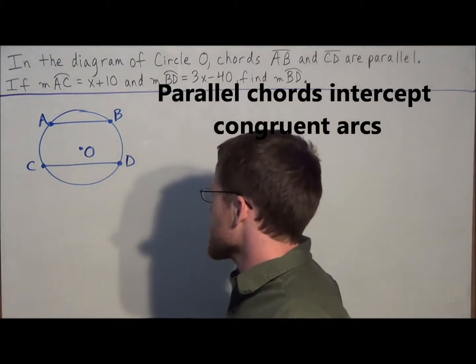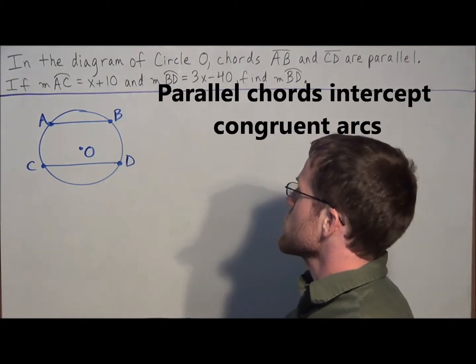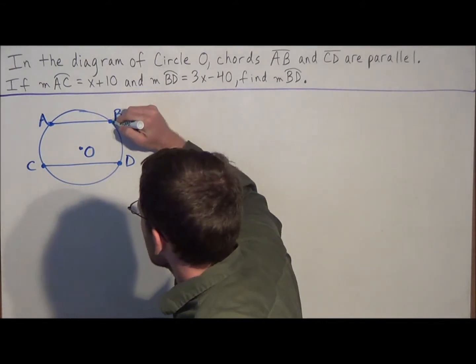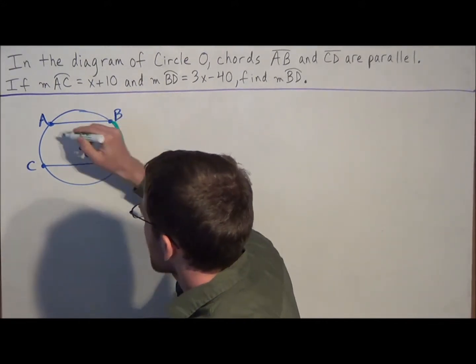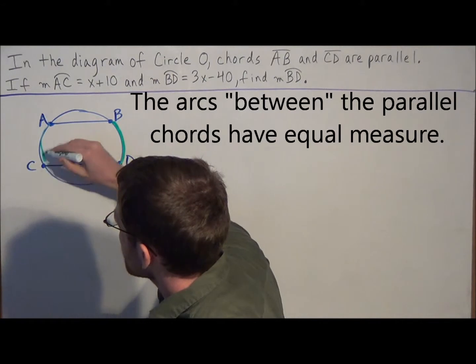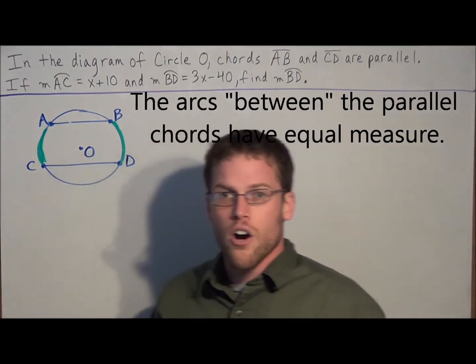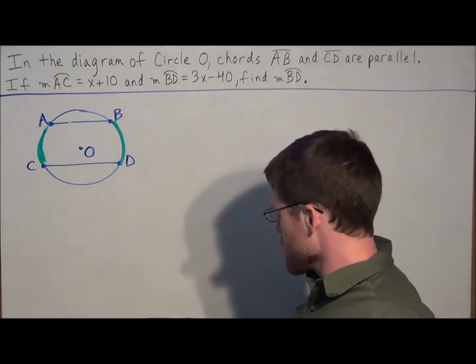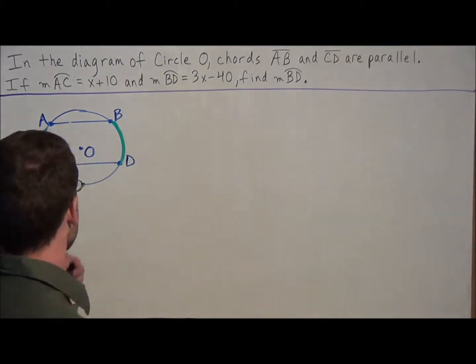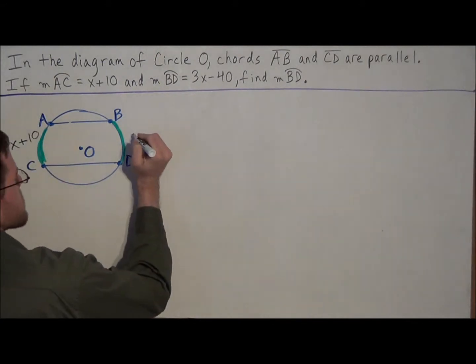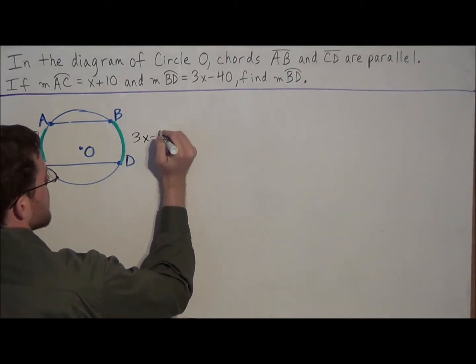So what that means in the context of this problem is since chords AB and CD are parallel, we know that they are intercepting congruent arcs. So we could say that arcs AC and arcs BD are congruent. So what we should do first is just label everything. We know that arc AC is equal to x plus 10, and we know that arc BD is equal to 3x minus 40.